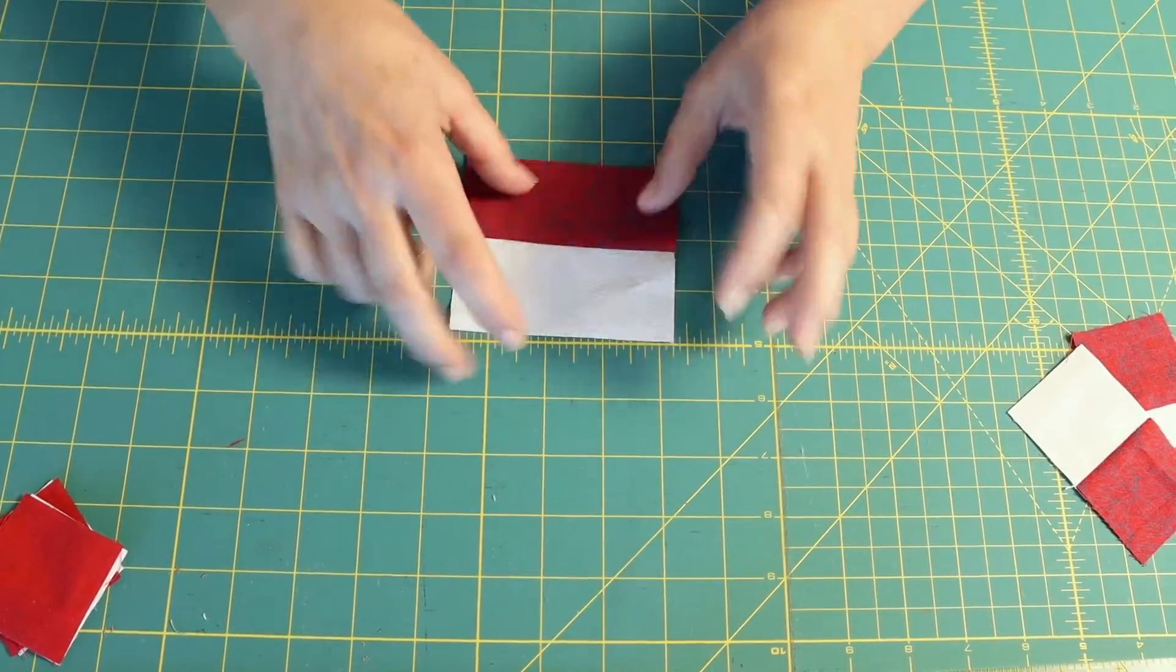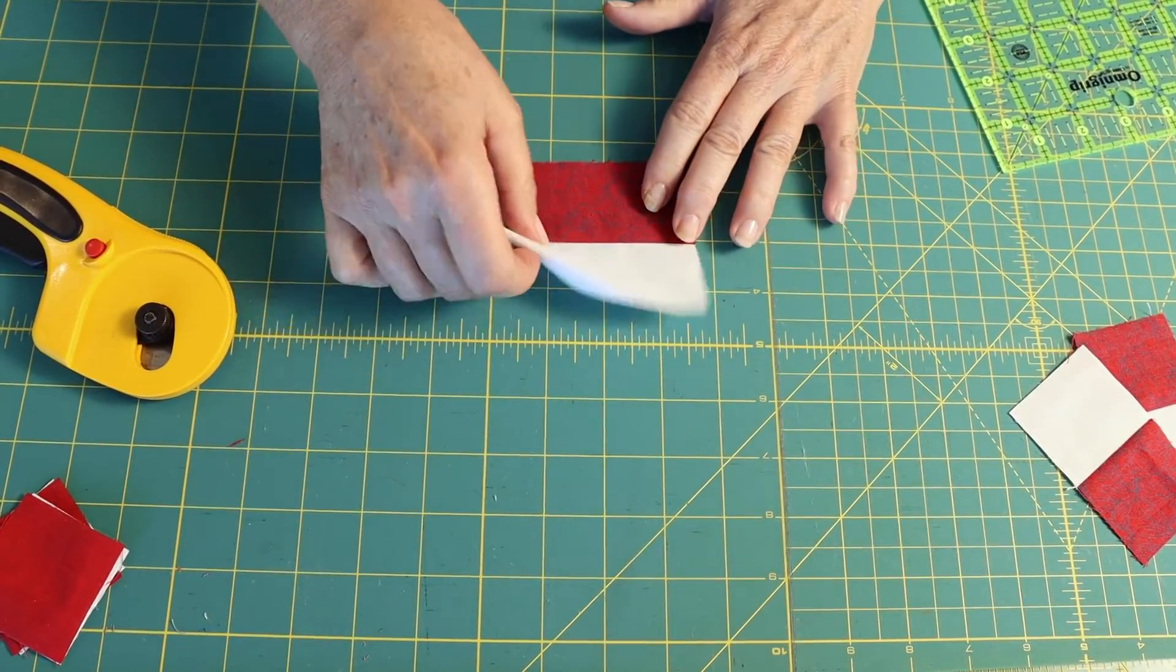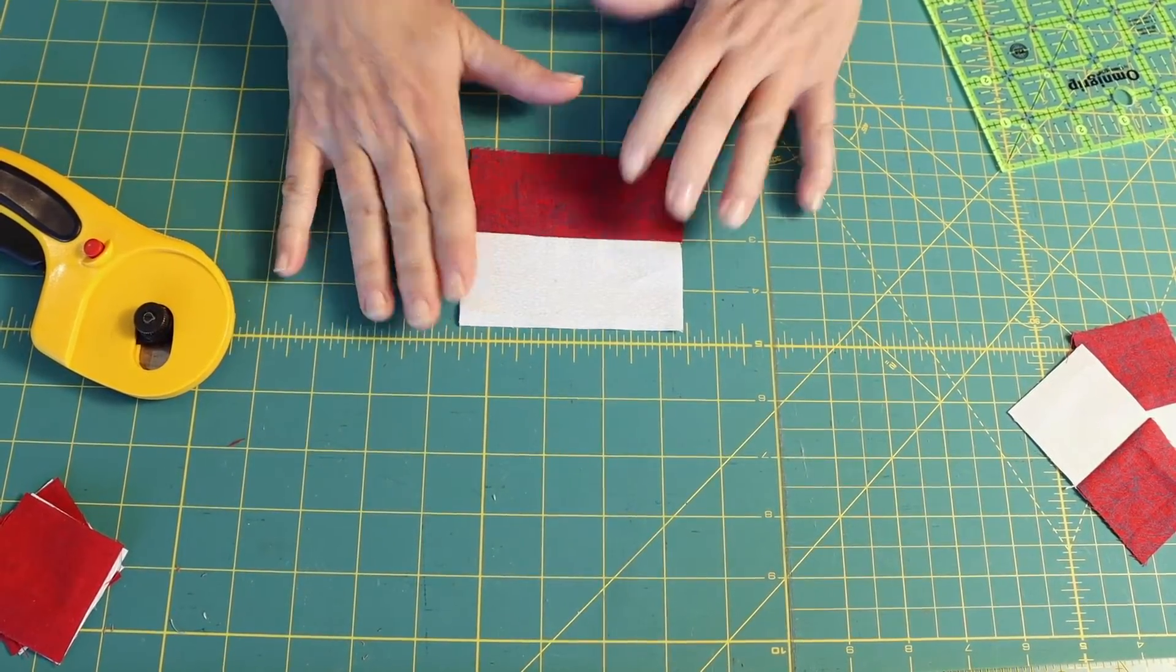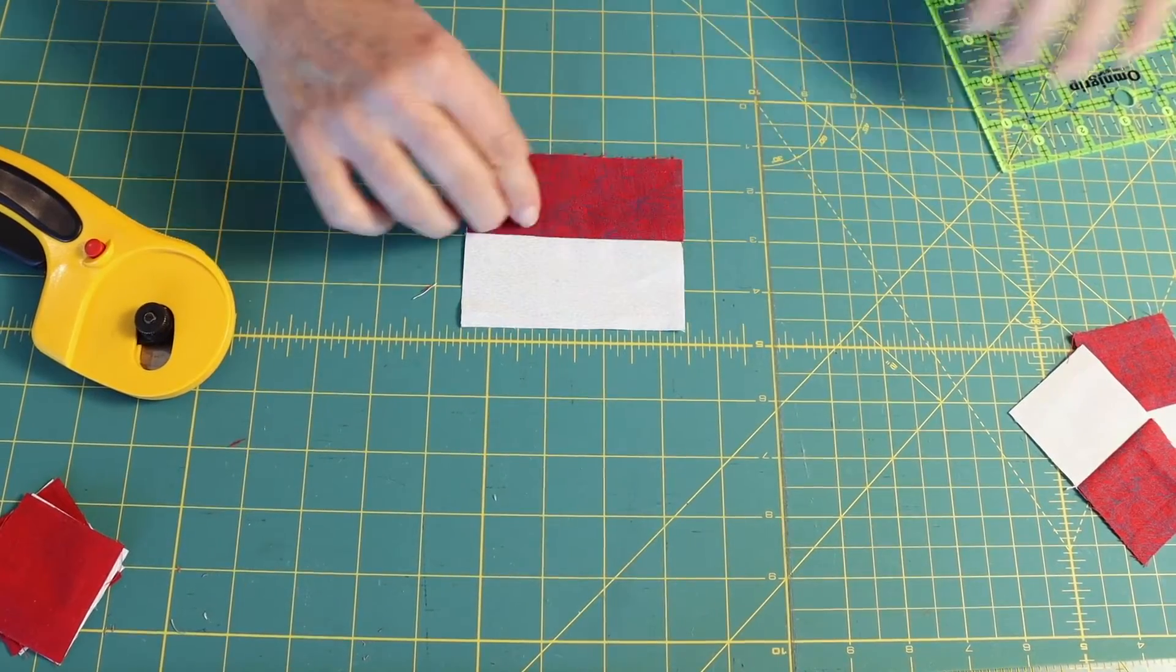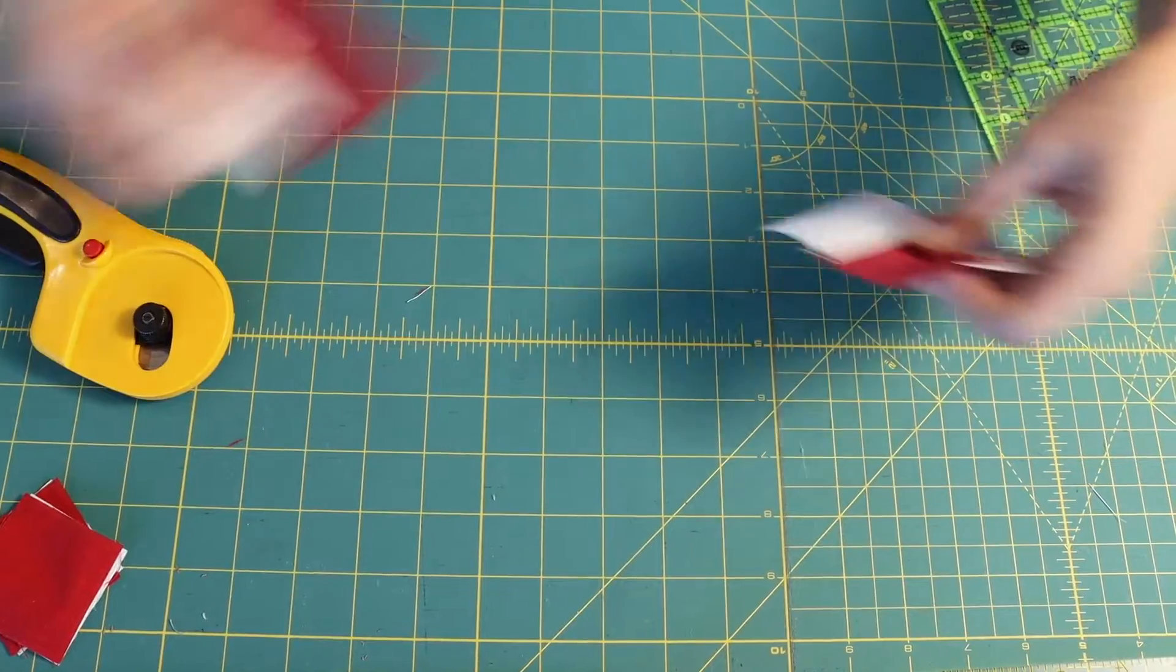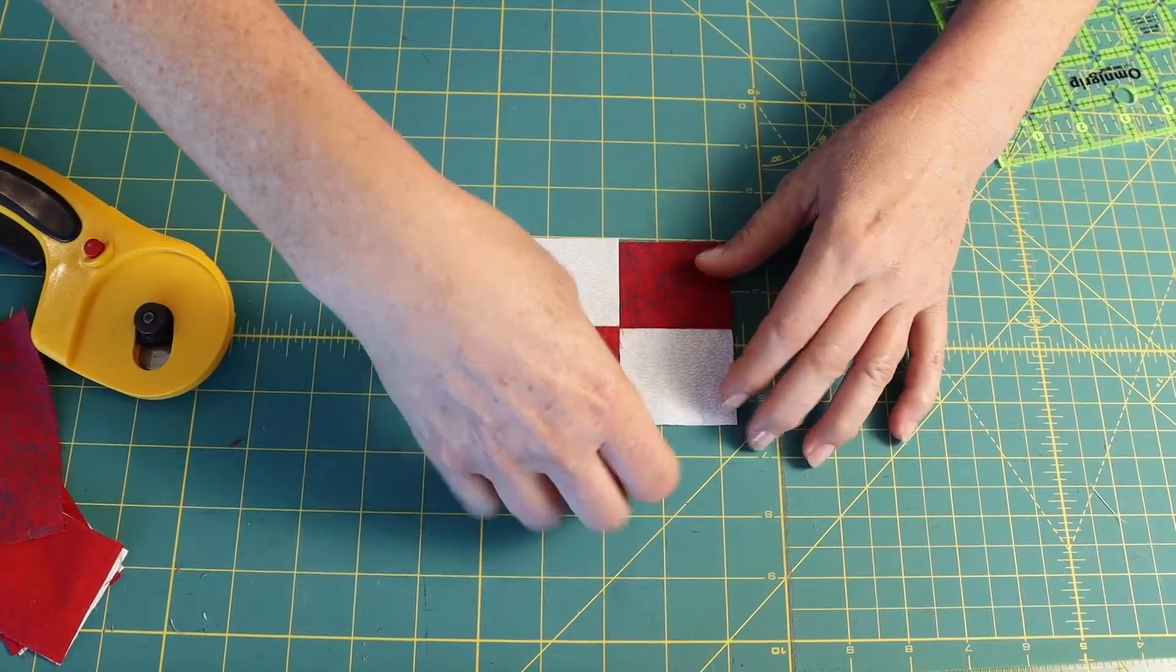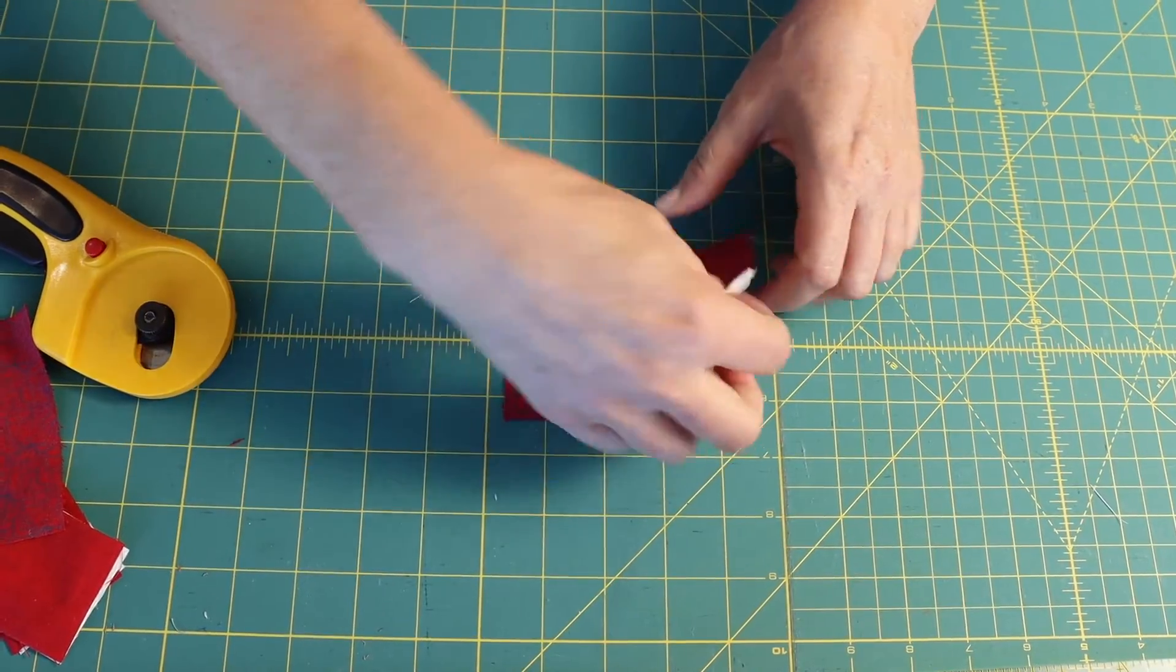But in this day and age with rotary cutters, it's sometimes easier to do what they call strip piecing, where you take strips of fabric, sew them on a seam, and then cut them up so they look like this. Then you would take these two and sew them together like this. This is where it gets a little trickier.